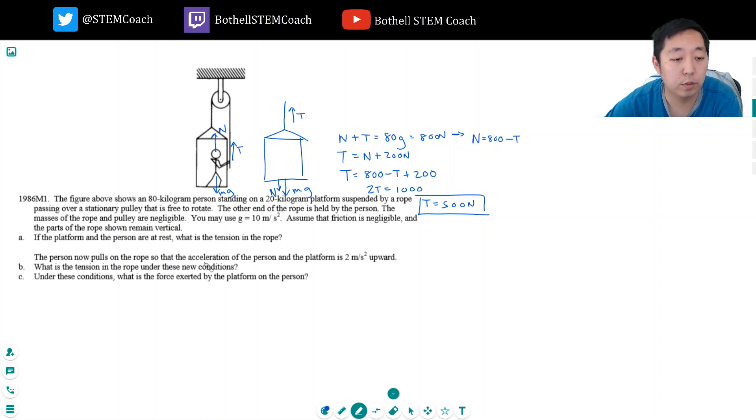The person now pulls on the rope so the acceleration of the person and the platform is two meters per second upward. What is the tension of the rope under these new conditions? So now instead of the forces being equal, the net forces have to give me a net acceleration up at two meters per second squared.